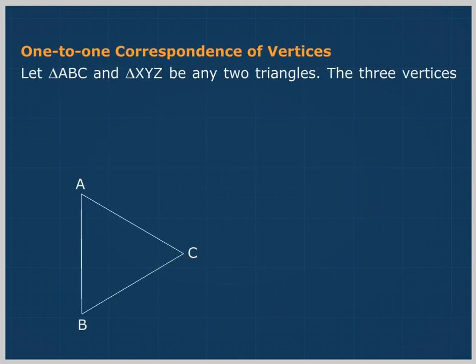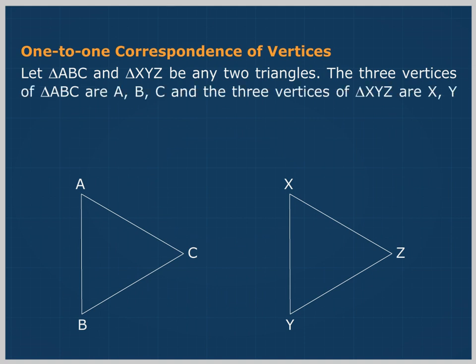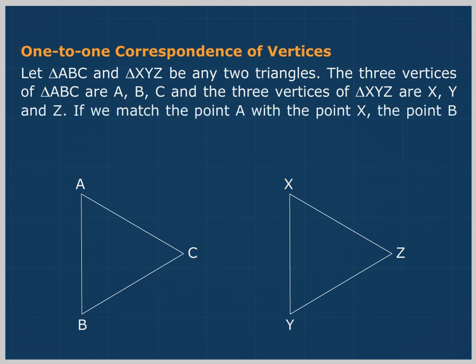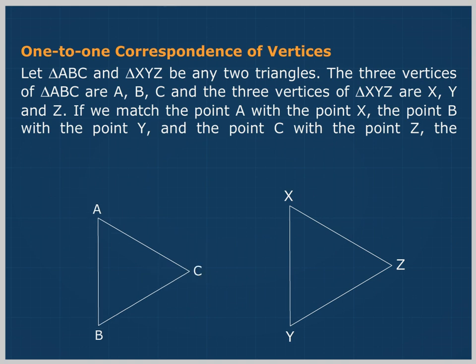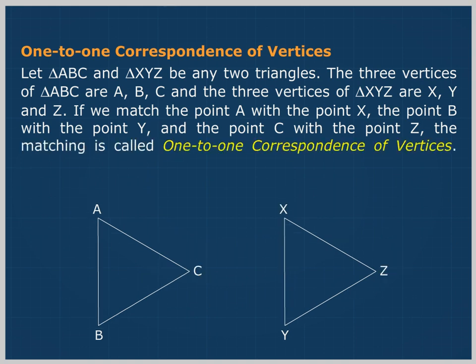Let triangle ABC and triangle XYZ be any two triangles. The three vertices of triangle ABC are A, B, and C, and the three vertices of triangle XYZ are X, Y, and Z. If we match A with X, B with Y, and C with Z, the matching is called one-to-one correspondence of vertices.